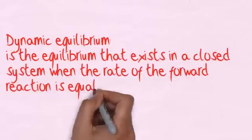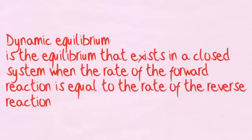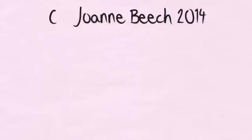Dynamic equilibrium. This is the equilibrium that exists in a closed system when the rate of the forward reaction is equal to the rate of the reverse reaction.